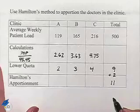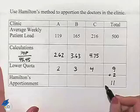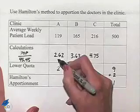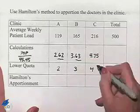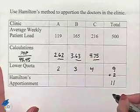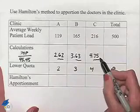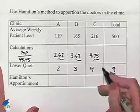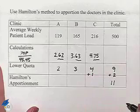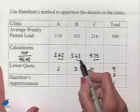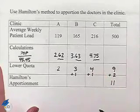We're going to figure out where to add that by looking at our decimal parts. We have .62 for clinic A, .63 for clinic B, and .75 for clinic C. Because clinic C has the largest decimal part, we're going to add 1 to clinic C's apportionment. And then the next highest is for clinic B, so we'll add 1 for clinic B.